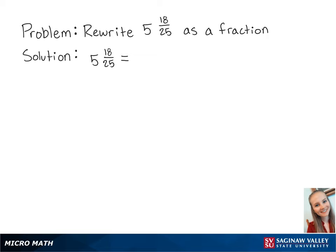For this problem, we're going to rewrite 5 and 18 twenty-fifths as a fraction. We can rewrite 5 and 18 twenty-fifths as 5 plus 18 twenty-fifths. Now 5 is equivalent to 5 over 1. To add these fractions, we need a common denominator, which we can use 25.